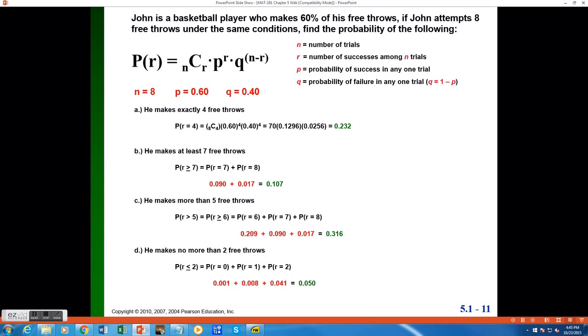Now to compute this probability, we will use the binomial formula, given here in the upper left corner. This formula says that if we want to find the probability of a certain number of successes, r, it's going to equal a combination of n and r, multiplied by the probability of success, raised to an exponent of r, the number of successes, times the probability of failure q, raised to an exponent of n minus r, which would be the number of failures. We have all these values set up for this problem, n is 8, p is 0.6, q is 0.4, and now we are ready to compute this probability.